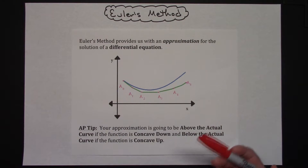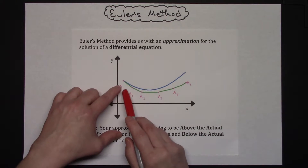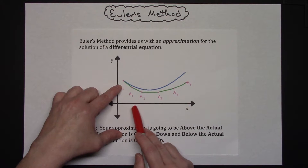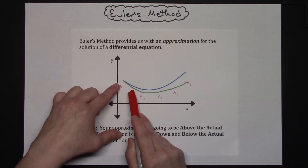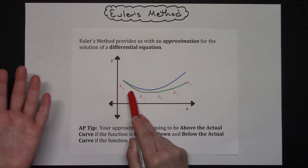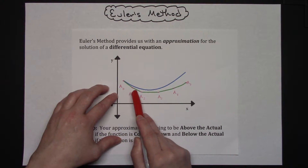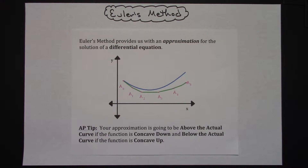Another way to have a better approximation would be to pick a delta x that's relatively small. When you generate that new point, if your delta x is smaller, you're going to be generating shorter line segments and you will stay closer to that real solution.